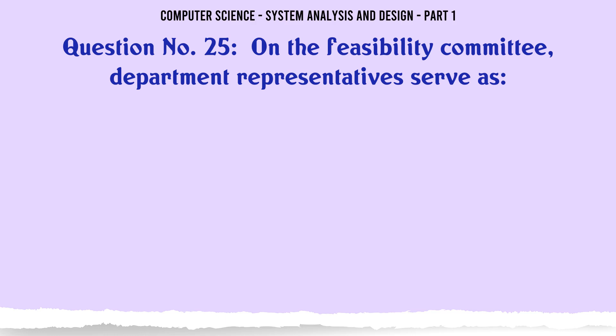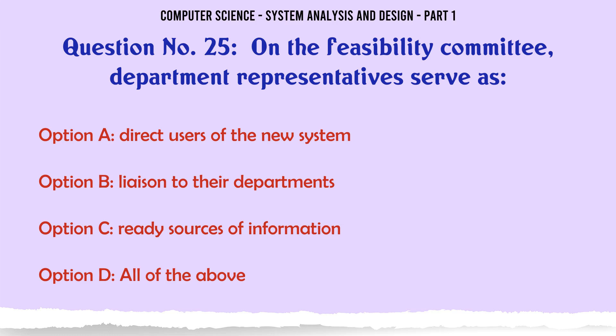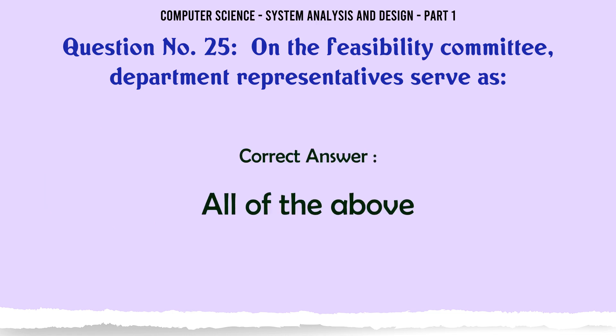On the feasibility committee, department representatives serve as: A. Direct users of the new system. B. Liaison to their departments. C. Ready sources of information. D. All of the above. The correct answer is: All of the above.